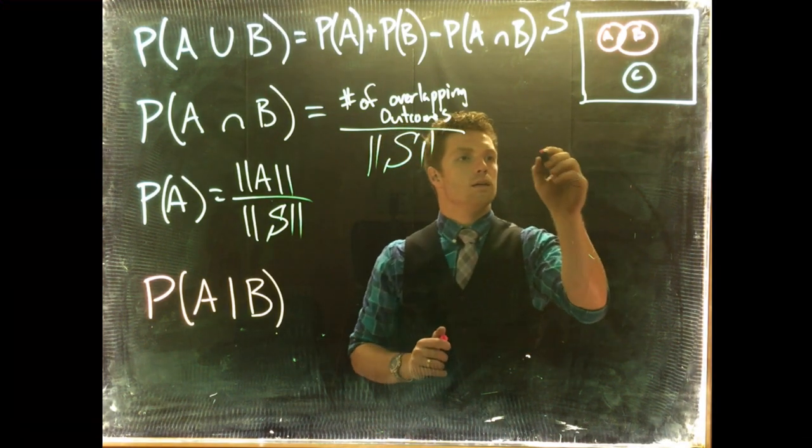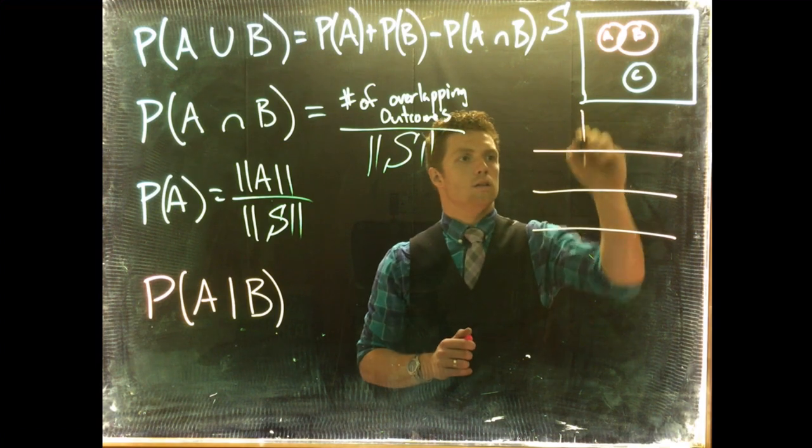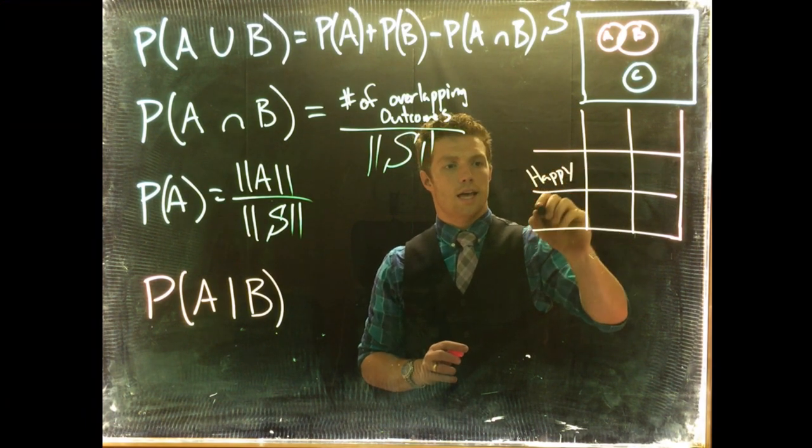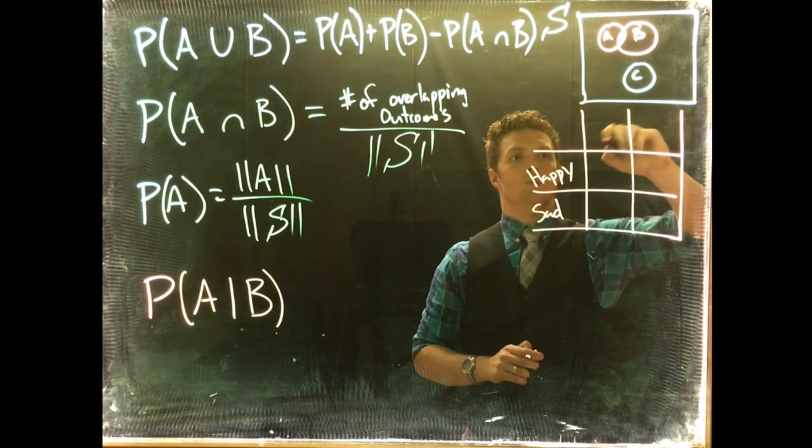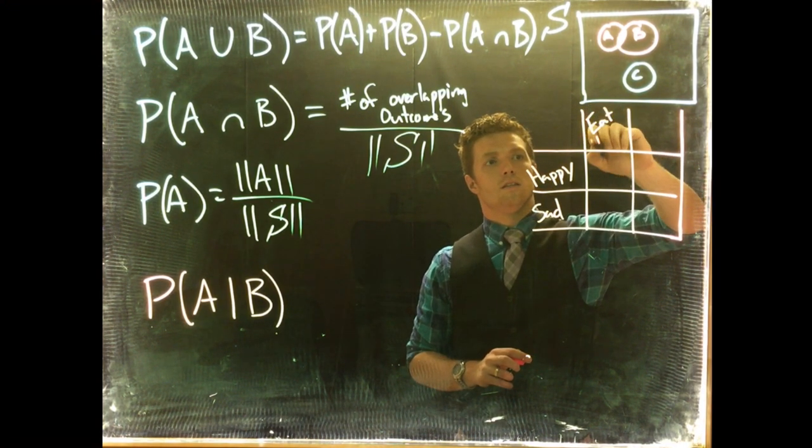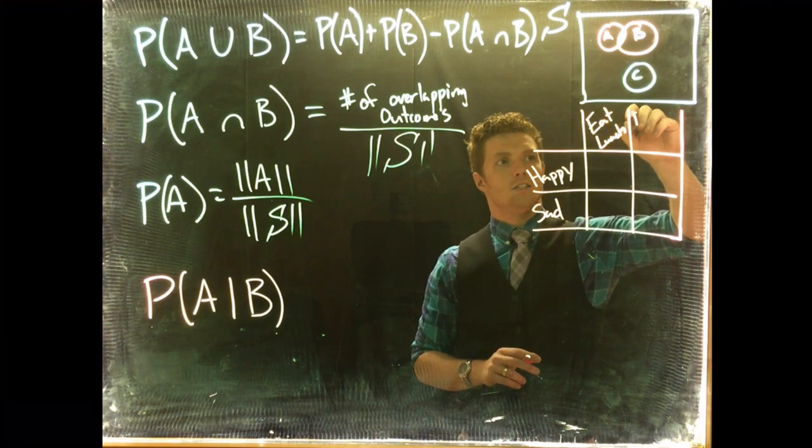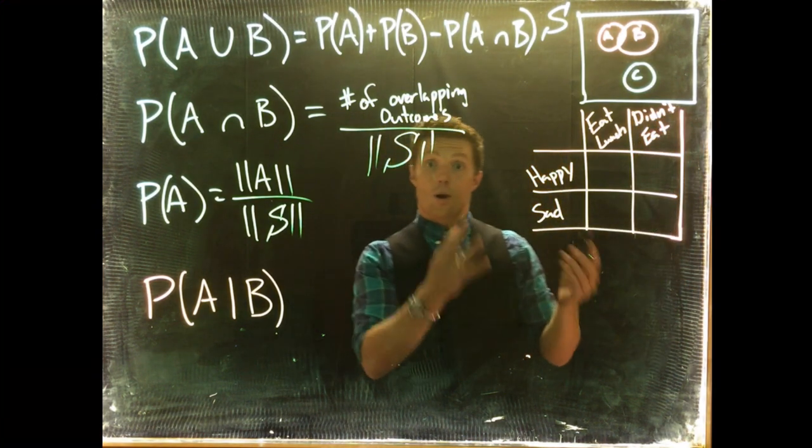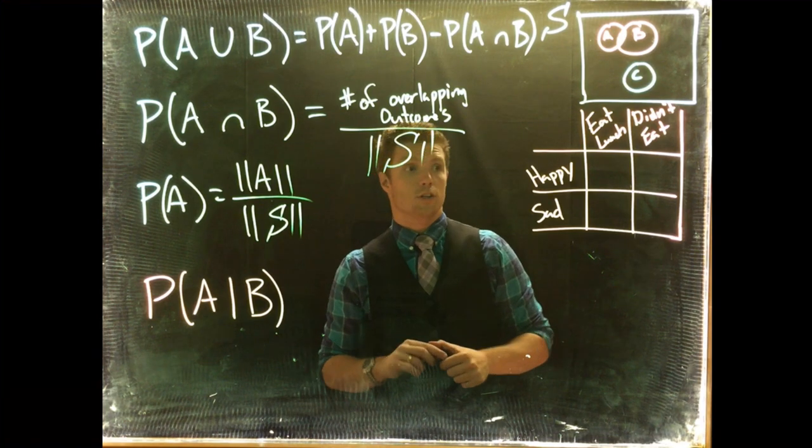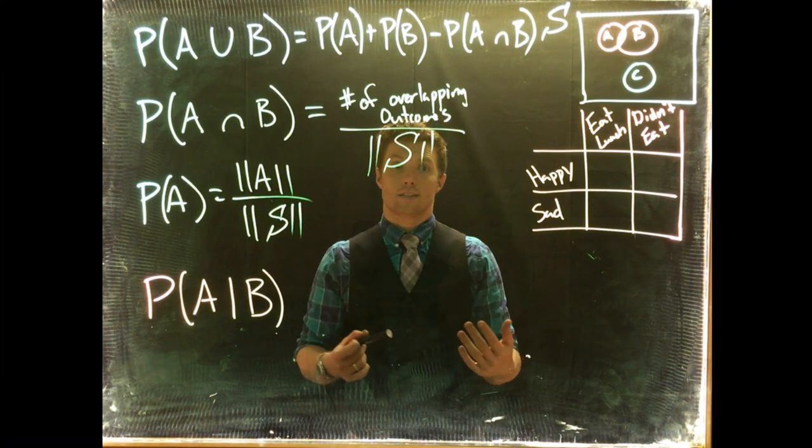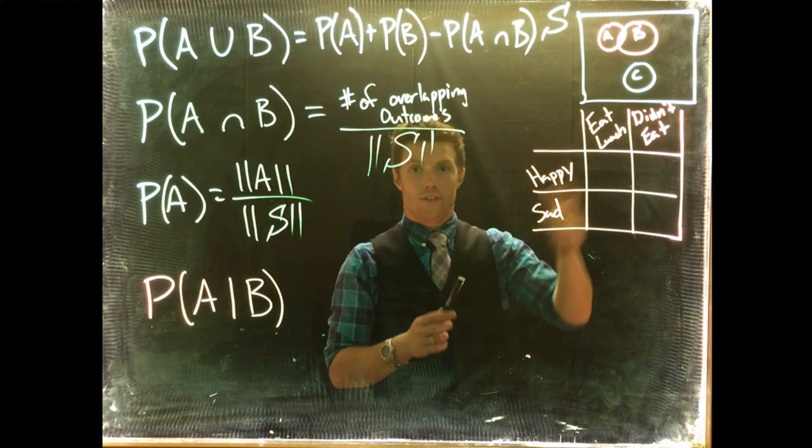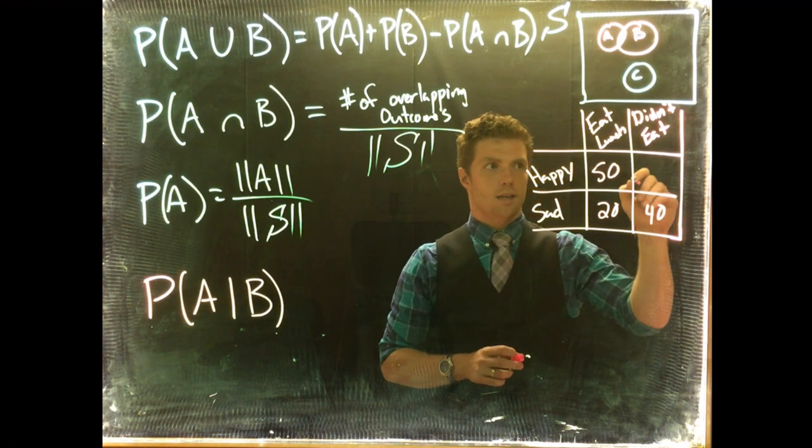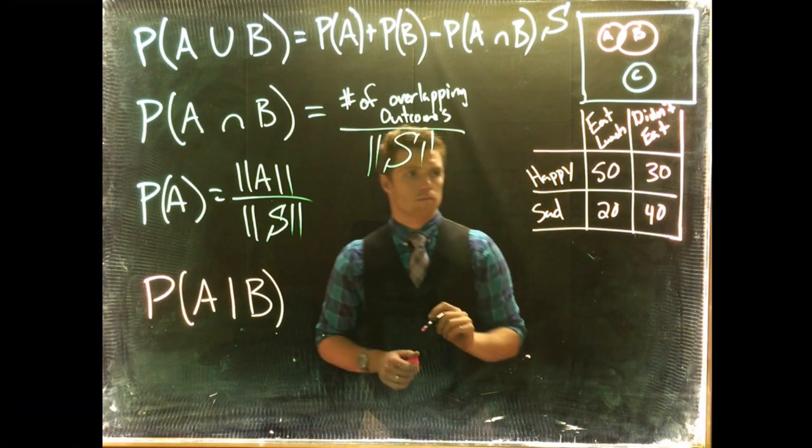Let's write up a quick contingency table and we can say happy, sad, and then we could do eat lunch. So we could go out and do this quick survey. We ask people, are you happy or sad? You can't be both, you got to pick one or the other. And we can also ask them, have you eaten lunch or have you not eaten lunch? So if you've eaten lunch, maybe we can do something like 50 here, 20, and then maybe it's 40 and 30 for example.